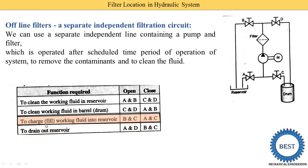Case 3: to charge or fill the working fluid into the reservoir. This is needed when oil leaks from the hydraulic system and the reservoir level drops. Valve C is opened to take oil from the drum, and valve A is closed so oil passes through the pump and filter. After filtration, valve B is opened and valve D is closed, so the cleaned oil from the drum is supplied into the reservoir.